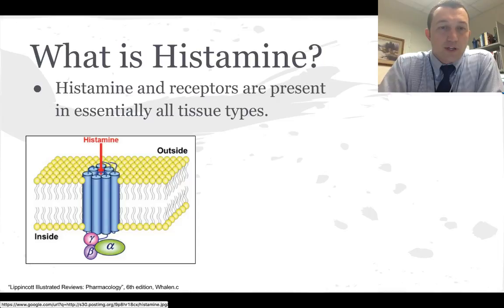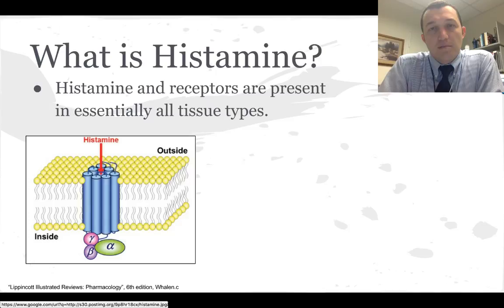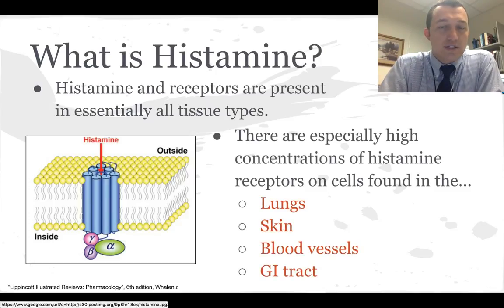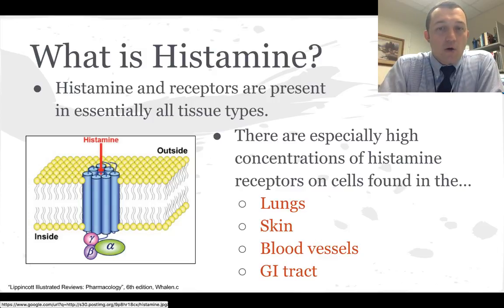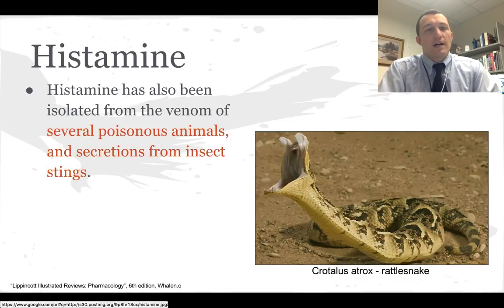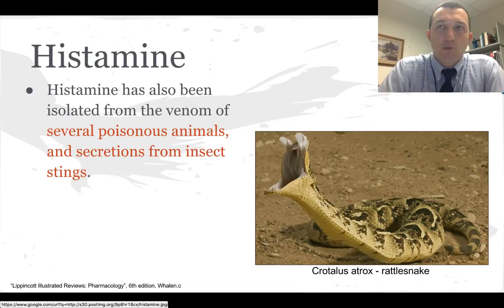Histamine is really widely present throughout all tissue types, and the receptors for histamine are also found throughout the body but in especially high concentrations in certain tissues. The highest concentration of histamine receptors are found on cells in the lungs, skin, blood vessels, and the GI tract. So if there's a lot of histamine being released, it's mostly going to affect these organs or structures.